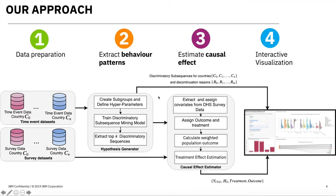The FP platform provides the following facilities. First, automatically characterize subgroups of interest using patterns that are unique to a subgroup — that is, discriminatory — providing the ability to automatically generate hypotheses for various subgroups. Second, estimate the causal effect of a particular contraceptive method on discontinuation across different countries. This technique enables us to systematically verify the hypothesis generated in the first step. Finally, an integrated dashboard with visualization techniques to make these machine learning insights accessible to a domain expert to explore discontinuation and contraceptive use.